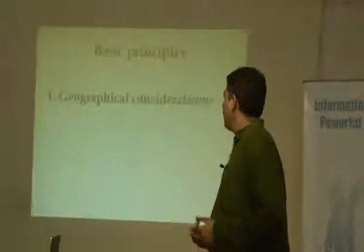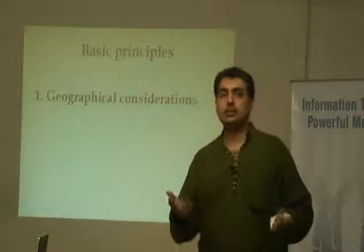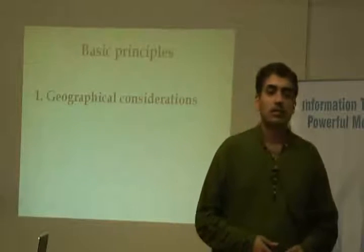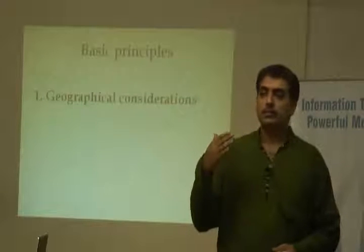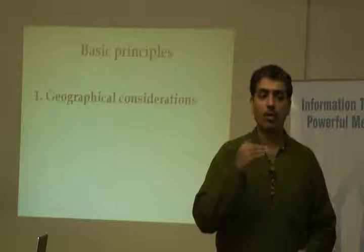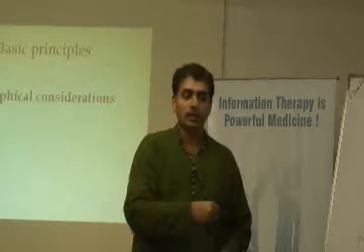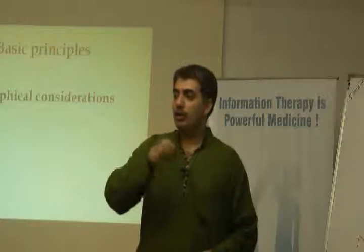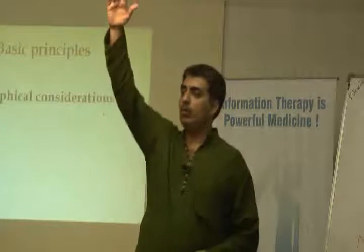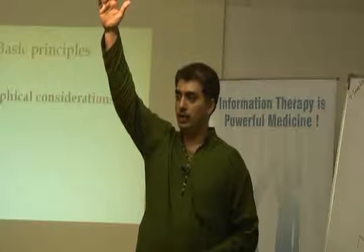First we will have to see the geographical considerations, which are the most fundamental for any plot of land. India spans from 8 degrees north latitude to 32 degrees north latitude — Kanyakumari is at 8 degrees north and somewhere around Ladakh is around 32 degrees north latitude.